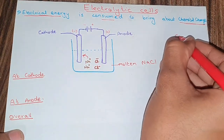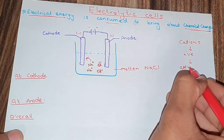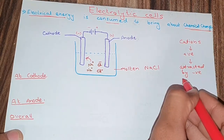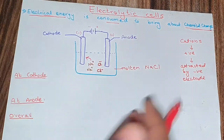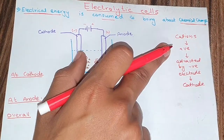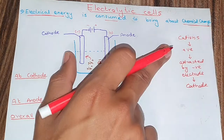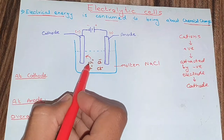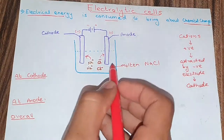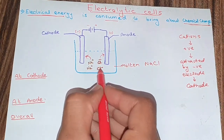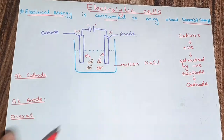Cations have a positive charge and are attracted by the negative electrode. This negatively charged electrode is called the cathode, because it attracts cations. Similarly, the other electrode has a positive charge and attracts the negatively charged anions — chloride ions — so it is called the anode.